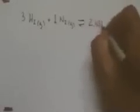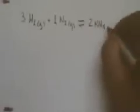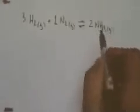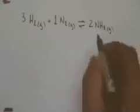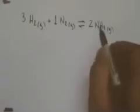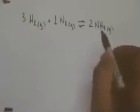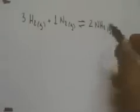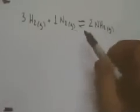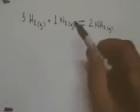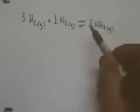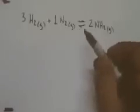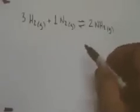We'll assume that we have a closed container such that the system can achieve equilibrium. That means that as the elements nitrogen and hydrogen are forming the product ammonia, the ammonia molecules also crash into each other and reform the elements nitrogen and hydrogen. Once those two rates — the rate of the forward reaction and the rate of the reverse reaction — are equal, then the system is said to be at equilibrium.